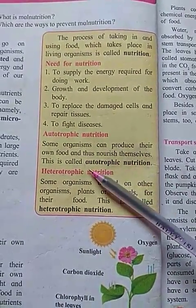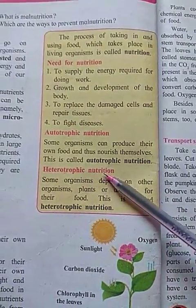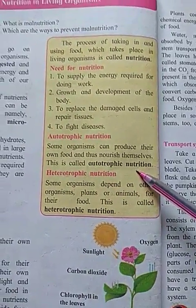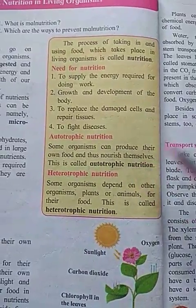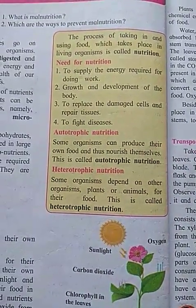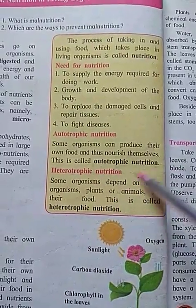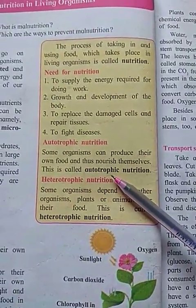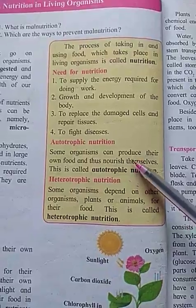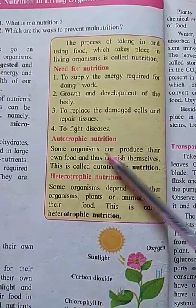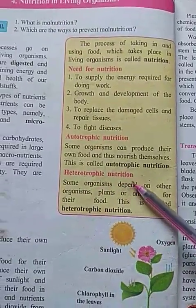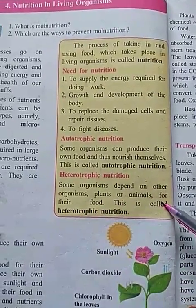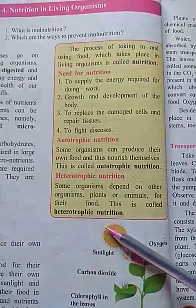Some organisms can produce their own food and thus nourish themselves — this is called autotrophic nutrition. Some organisms depend on other organisms for food — this is called heterotrophic nutrition.